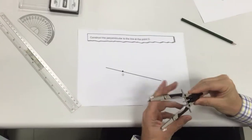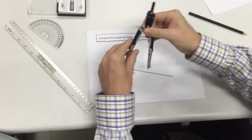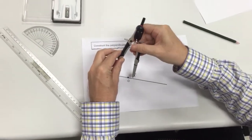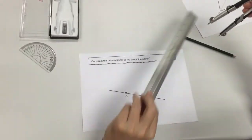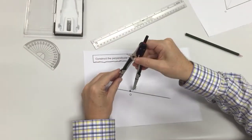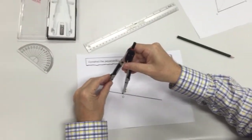So to do this, you've got to do something slightly different. Take your compass. You don't need to actually measure a distance. Just put your point on O.